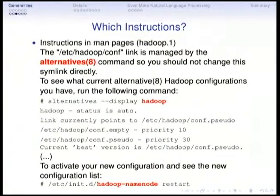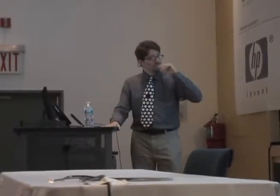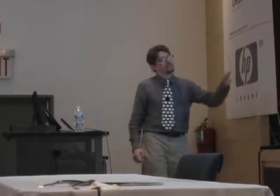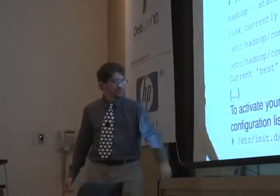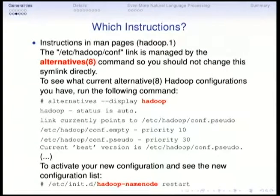Debian has a very strong tradition in automating as much as possible this type of process and tests. So this type of technology can enable us to continuously test instructions related to packages. Here is an example from Debian Java. There is this program called Hadoop, and I was following the instructions on the man page. First, it says it's managed by alternatives — but now it's called update-alternatives. Then it says 'show Hadoop' but now it's called hadoop-conf. And then it says 'restart Hadoop name node' but now it's called hadoop-namenode-d.